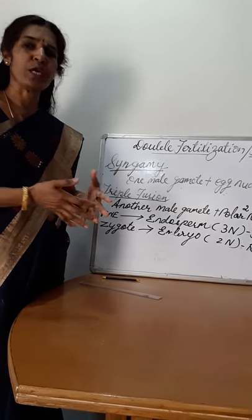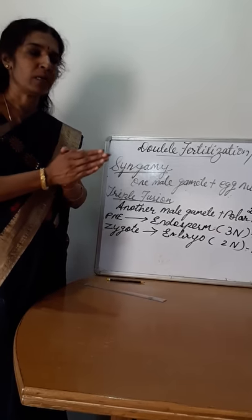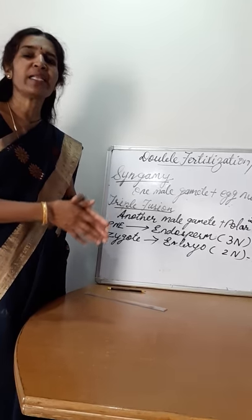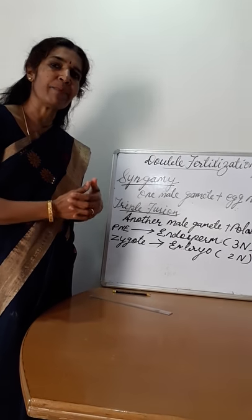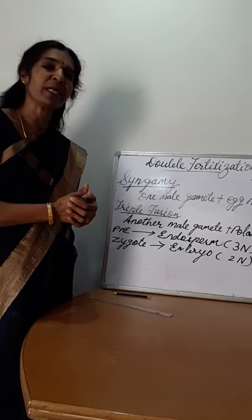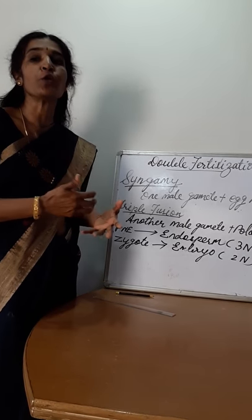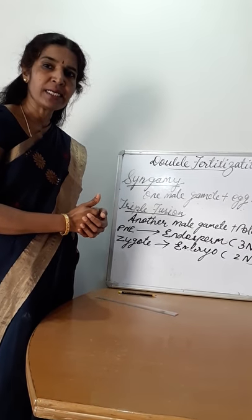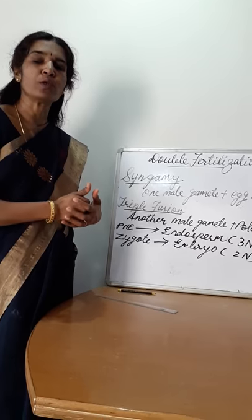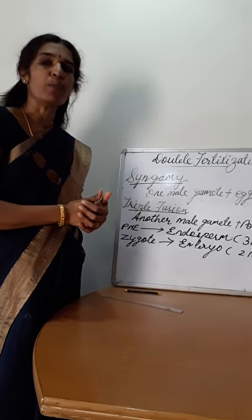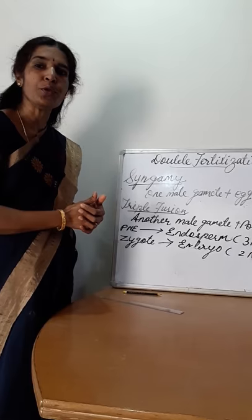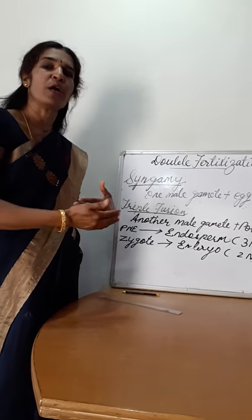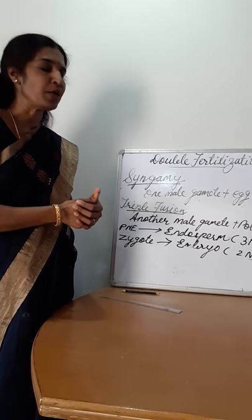In case plant breeders want to attain desirable characters, what process can they use? As you have learnt in the previous class, pollen can be stored in pollen banks for future use in crop breeding programs. Plant breeders use stored pollen with desired characters for plant breeding programs.